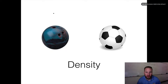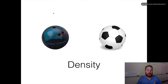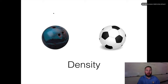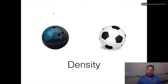We'd even use the same word: volume. So what's the difference between the two? Well, we know that a bowling ball is much more massive — we would say it has more mass than the soccer ball. It's about the same size but it has more mass, thus we could say that a bowling ball has a greater density than the soccer ball.